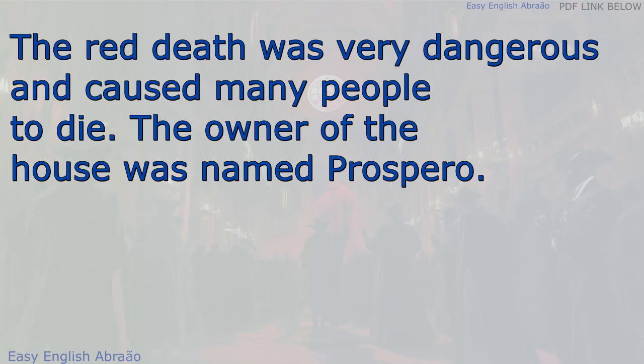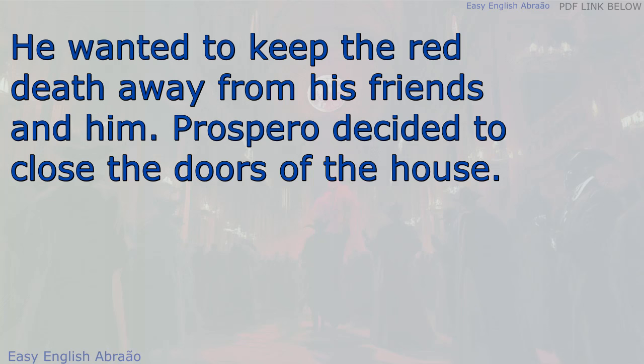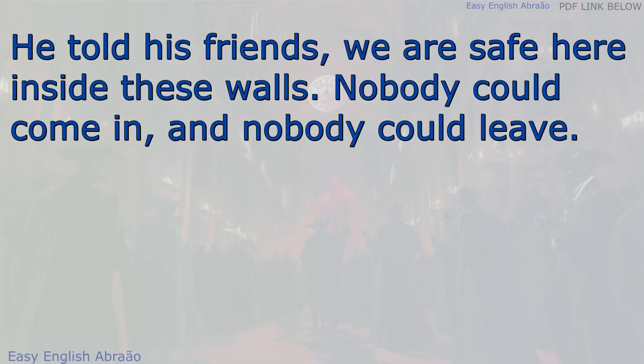The Red Death was very dangerous and caused many people to die. The owner of the house was named Prospero. He wanted to keep the Red Death away from his friends and him. Prospero decided to close the doors of the house. He told his friends, "We are safe here inside these walls." Nobody could come in, and nobody could leave.